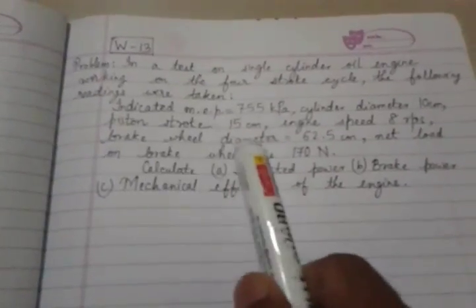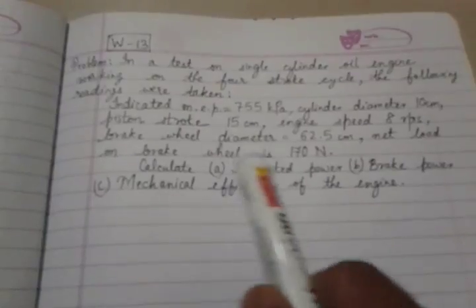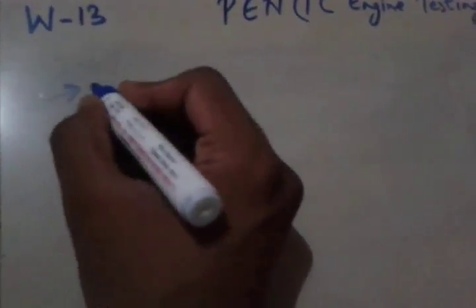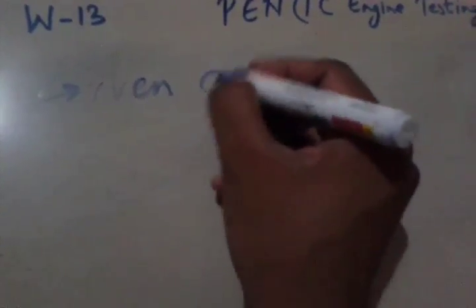As your brake wheel diameter is given and net load on brake is given, we can judge that this is prony brake dynamometer. So we have to use the formula accordingly. So let's start by writing the given data.